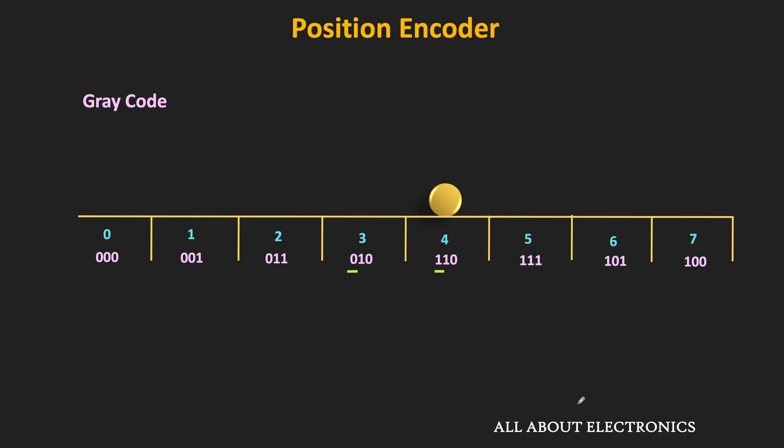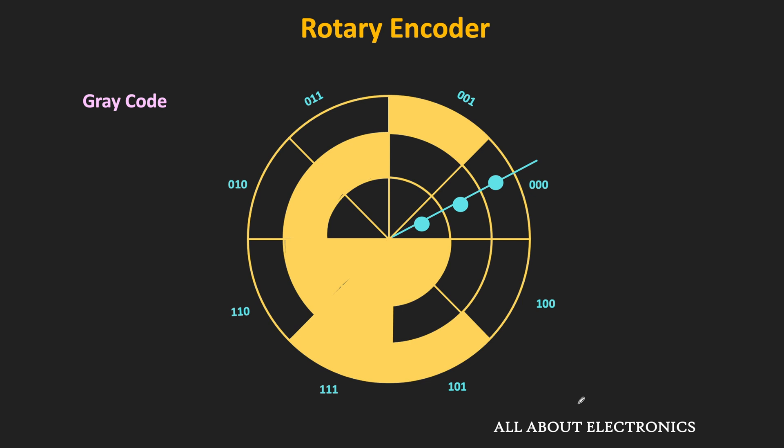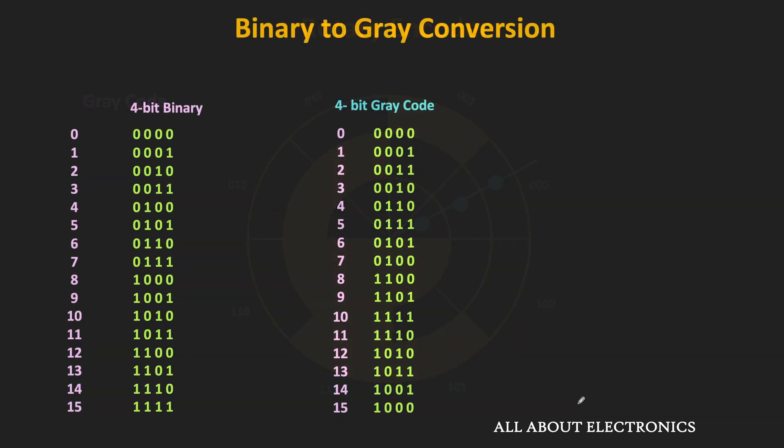Similarly, gray code is also used in rotary encoders for the measurement of angular position. Apart from that, it is also used in digital communication to reduce errors. During processing, it is often required to convert gray code into binary and sometimes binary into gray code. So first, let us see the binary to gray code conversion.